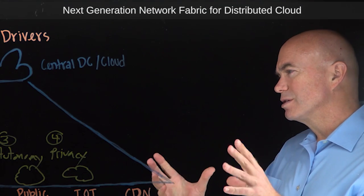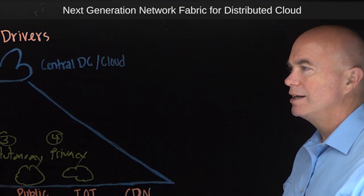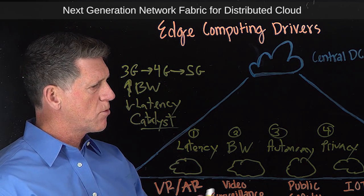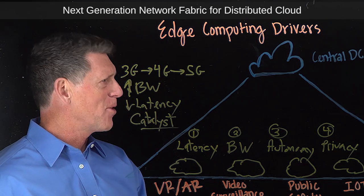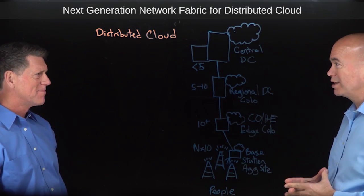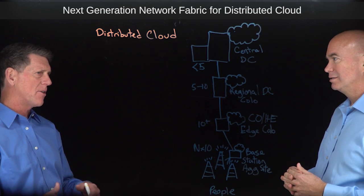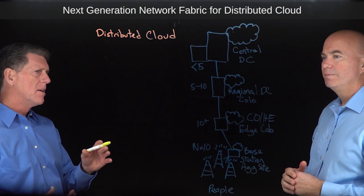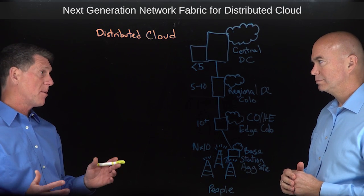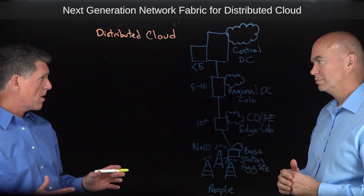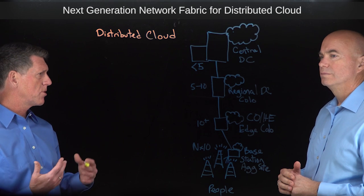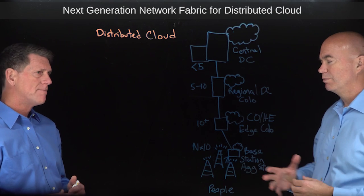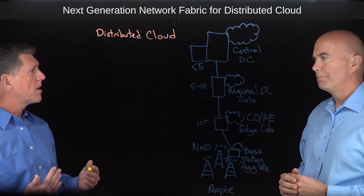Can you give me an example of how this looks in a real-world data center diagram? What I've laid out is kind of how the edge is emerging. Up top, I've got the centralized data center — typically you're going to see two of those sites, maybe up to five, whether it's service provider or enterprise. Then you've got folks who have regional data centers or are using co-location services, let's say five to ten. That's kind of where the edge is today.